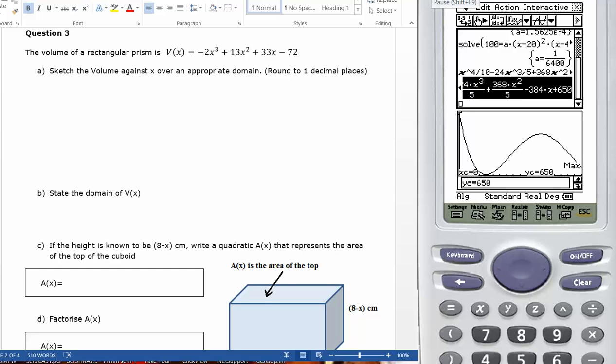This is Figure 11 Methods, chapter 3, Sacketts question number 3. The volume of a rectangular prism V(x) is given as this. Sketch the volume against x over an appropriate domain rounded to one decimal place.